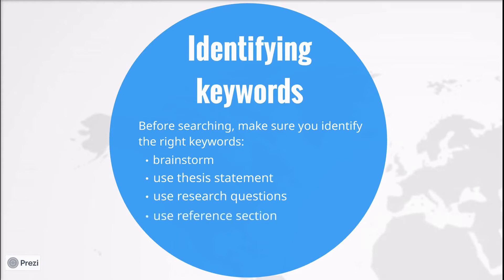Finally, as your research develops and you find sources, you should use these sources to compile an initial reference section, and you can use this to identify more keywords by looking at the titles of sources you already plan to use, or possibly identify authors who are experts in the field that you want to search more information from.